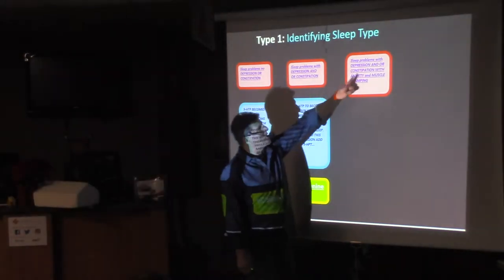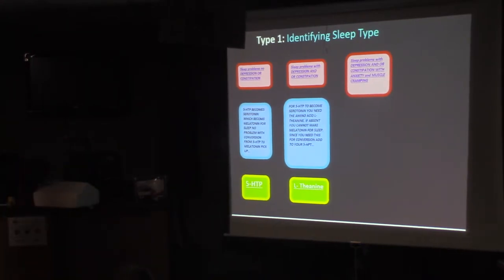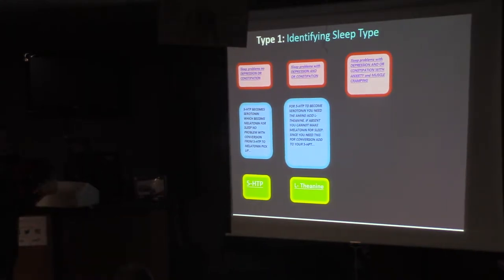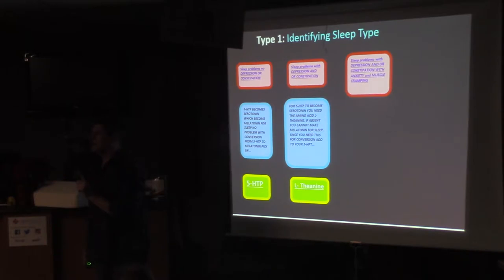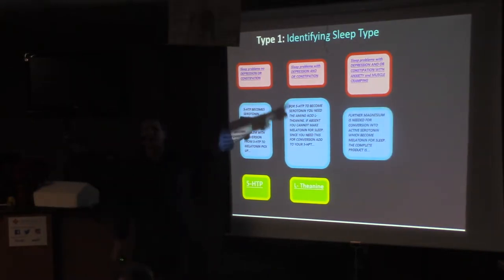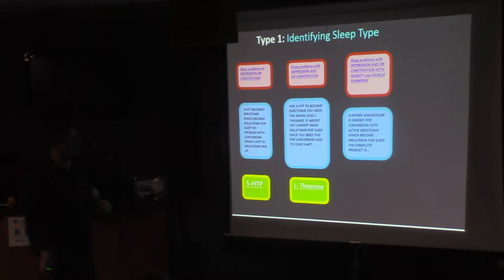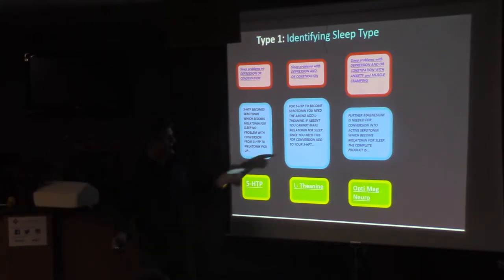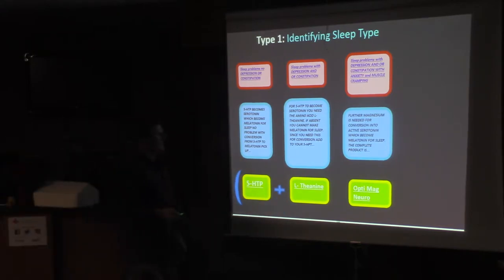Next, sleep problems with depression or constipation with anxiety. And by the way, you don't have to have everything. There's one slide where we talk about Tourette's Syndrome. You don't have to have Tourette's to take that particular supplement. But if you have Tourette's, you might want to take that supplement. But sleep problems with depression or constipation with anxiety and muscle cramping. Magnesium is needed to convert the 5-HTP into the active form of serotonin so it can become melatonin. So you need OptiMagNura, which is your magnesium supplement. You may need all of those, if that's you.